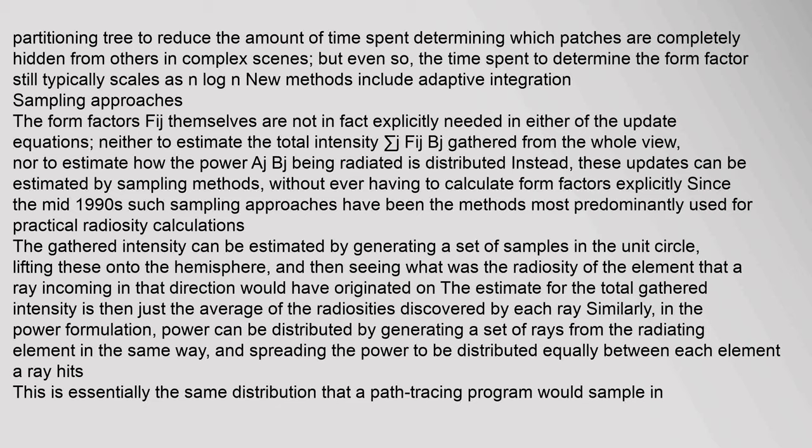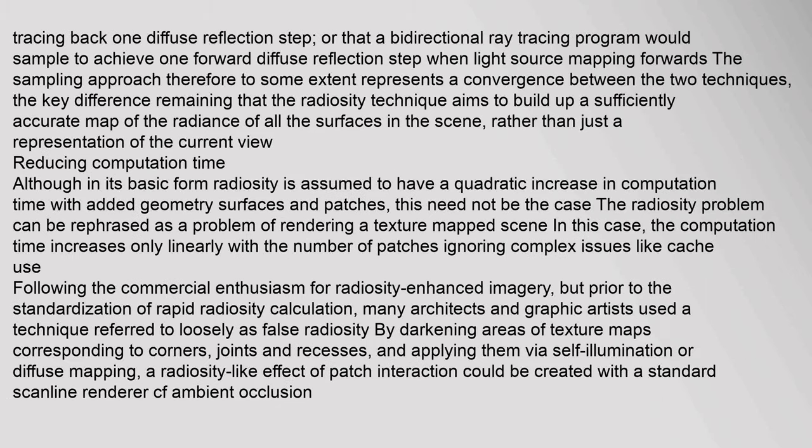The estimate for the total gathered intensity is then just the average of the radiosities discovered by each ray. Similarly in the power formulation, power can be distributed by generating a set of rays from the radiating element and spreading the power to be distributed equally between each element the ray hits. This is essentially the same distribution that a path tracing program would sample in tracing back one diffuse reflection step, or that a bidirectional ray tracing program would sample to achieve one forward diffuse reflection step. The key difference remaining is that the radiosity technique aims to build up a sufficiently accurate map of the radiance of all surfaces in the scene rather than just a representation of the current view.